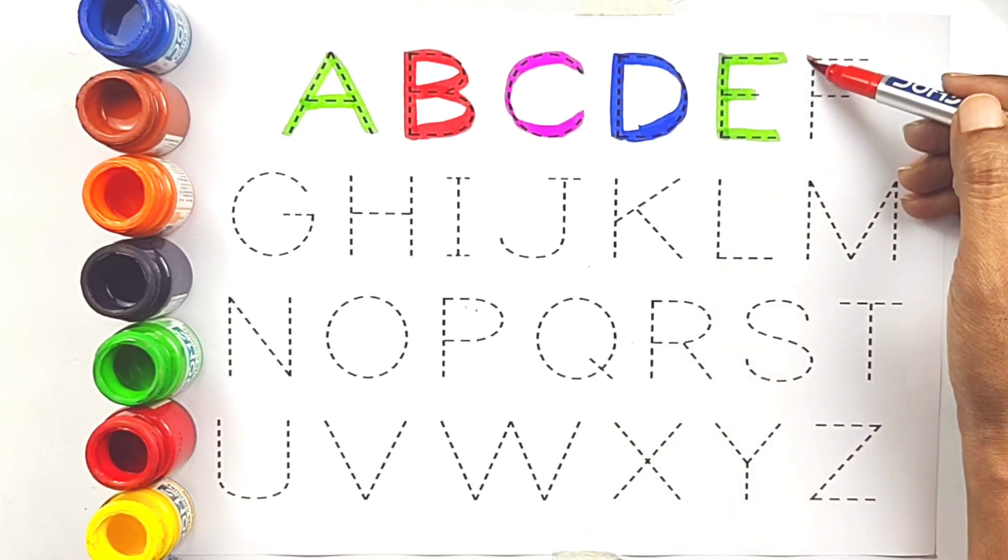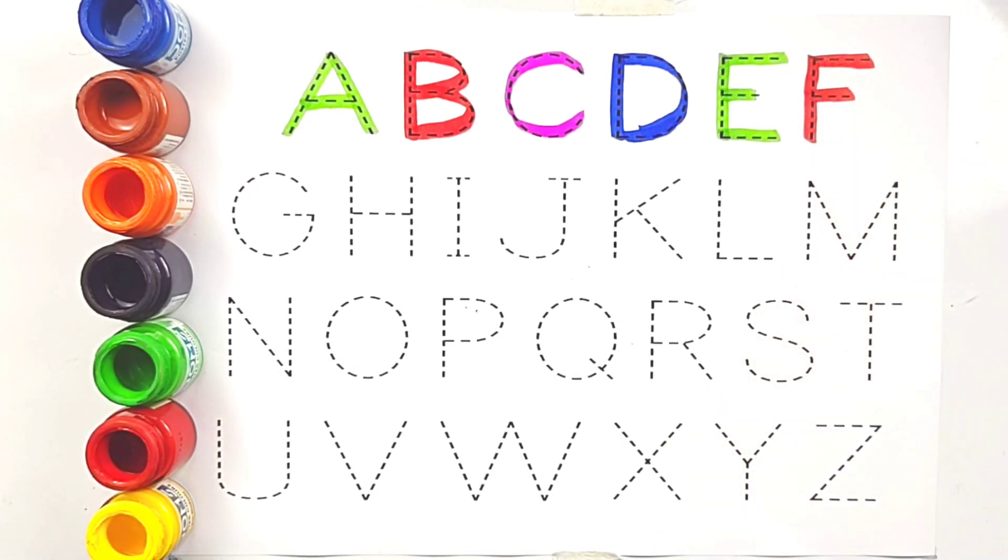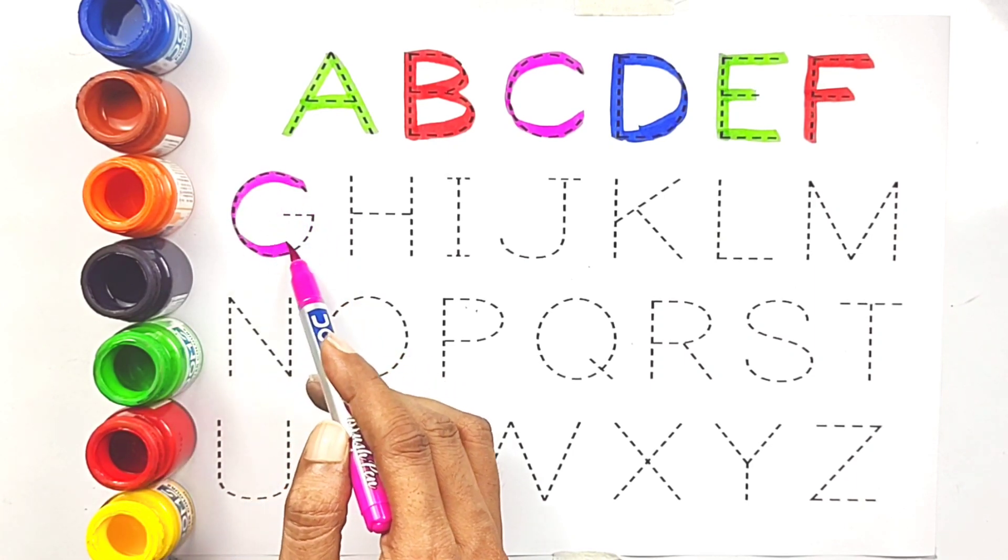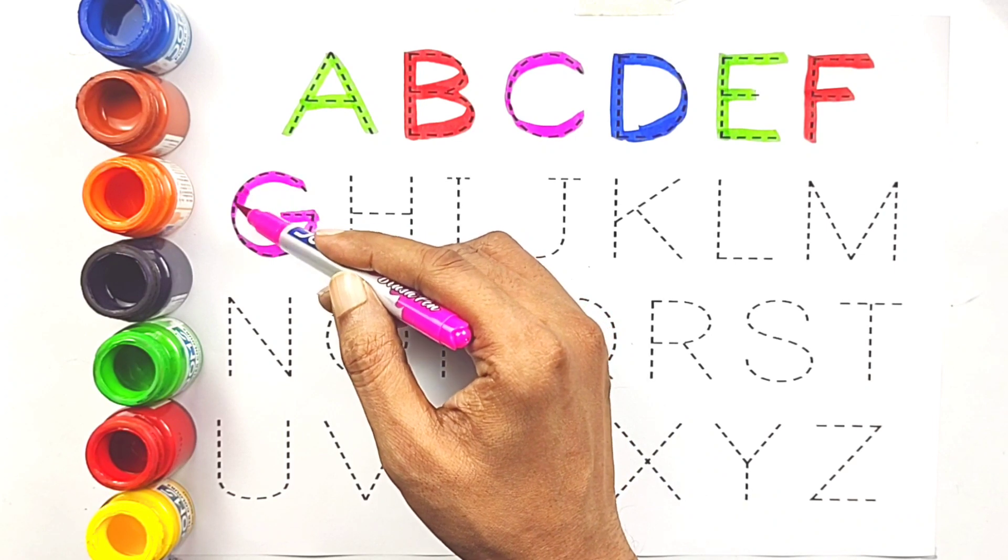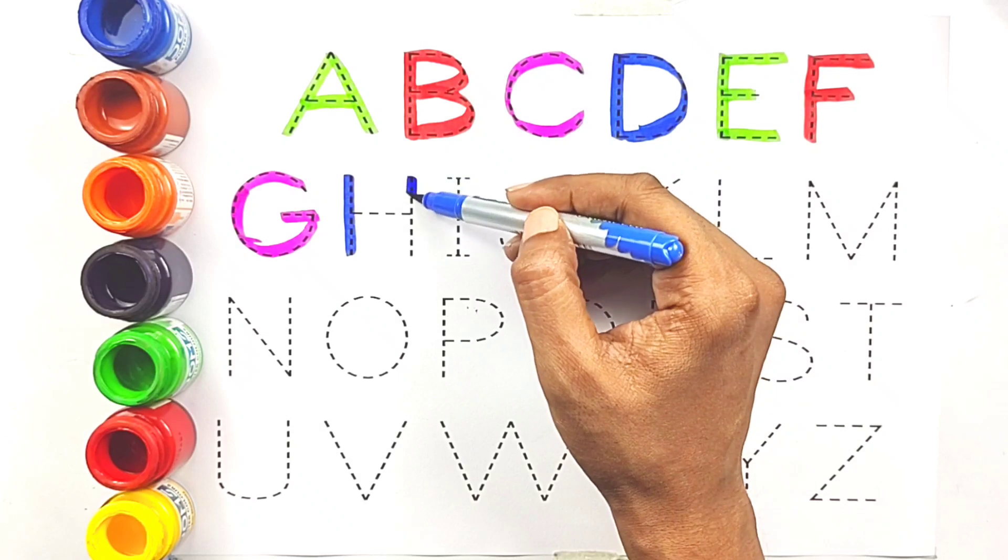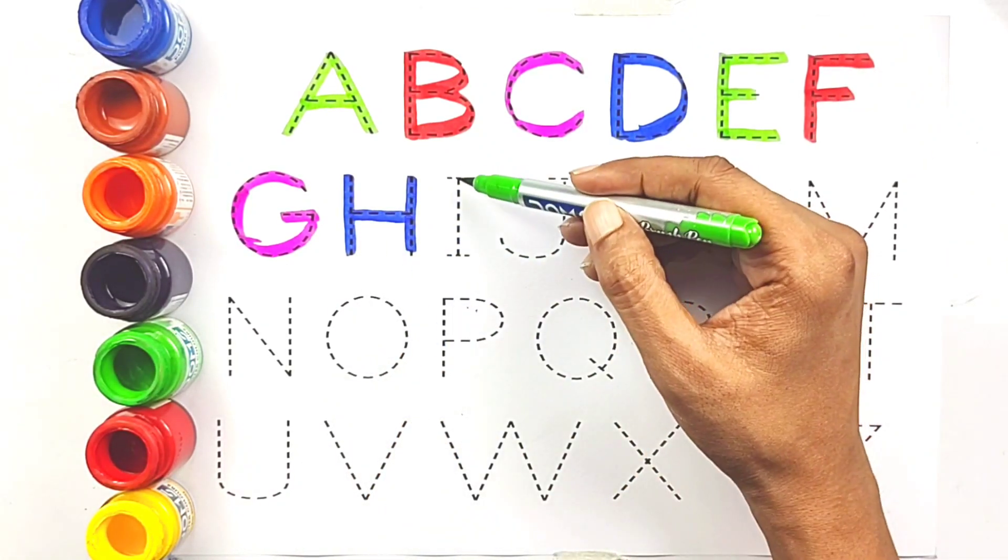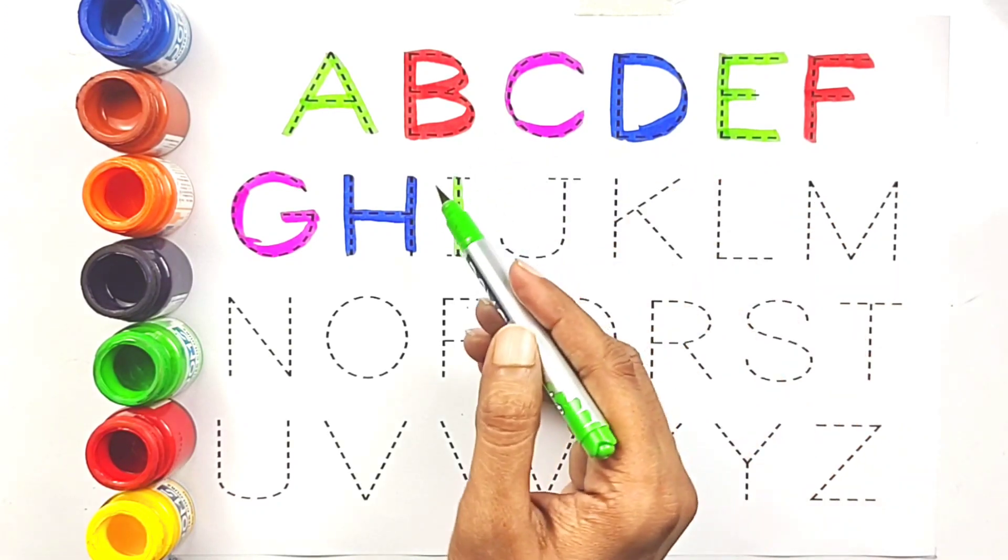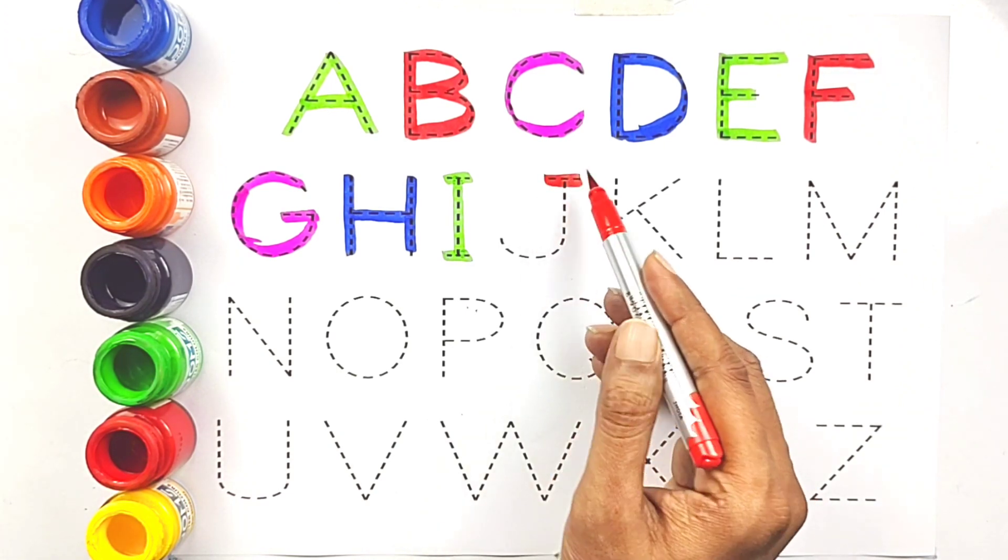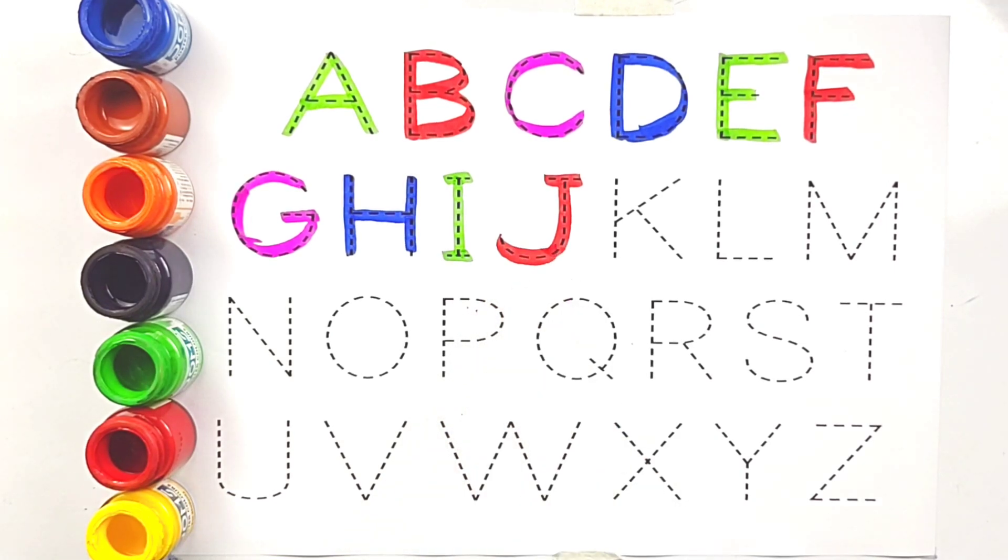Red color. F, F for fish. Magenta color. G, G for grapes, G for grapes. Blue color. H, H for hat, H for hat. Green color. I, I for ice cream, I for ice cream. Red color. J, J for jam, J for jam.